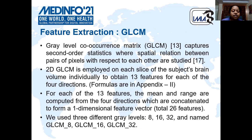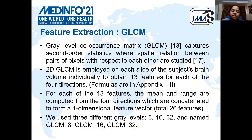The next method is GLCM, or Gray-Level Co-occurrence Matrix, which captures the second-order statistics. Here also, the 2D GLCM is employed on each slice of the brain individually to obtain 13 features for each of the four directions. The mean and range are then computed from the four directions, which are concatenated to form a 1D vector. We have used three different gray levels: 8, 16, and 32.